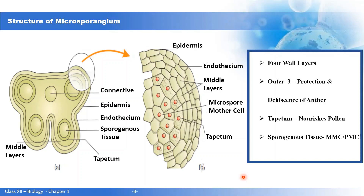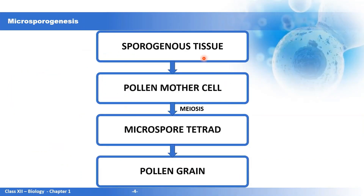To recap: the sporogenous tissue present in the center of each microsporangia contains pollen mother cells, also called microspore mother cells. These undergo meiosis to form a microspore tetrad. When the anther dehisces, each microspore matures to form a pollen grain. The pollen grain is known as the male gametophyte because it produces the male gametes.